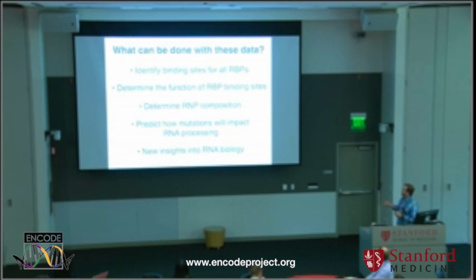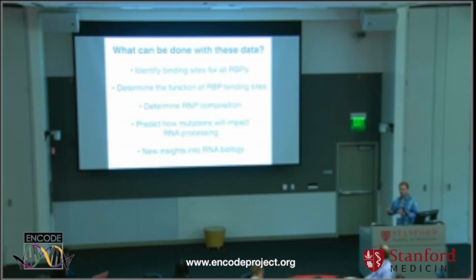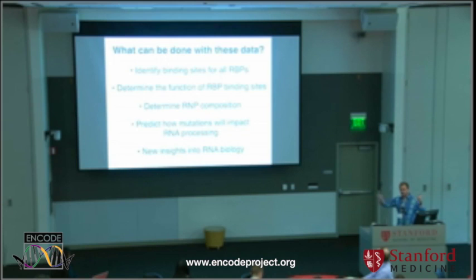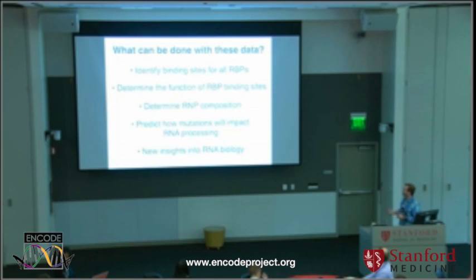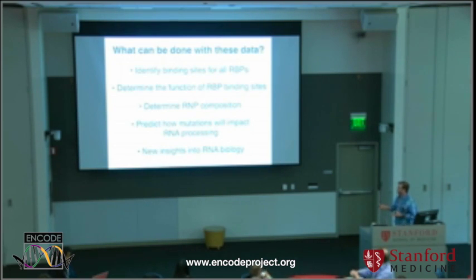We're going to be defining the binding sites and hopefully identifying the functions of these sites. One thing we're really interested in, once we get a large collection, is we can start looking at the composition of RNPs — this is the equivalent in the RNA world of chromatin structure. We can take RNA strands and decorate them with proteins, see how individual transcripts are bound by different proteins and how that may impact their function. We also hope to predict how mutations will impact RNA processing.